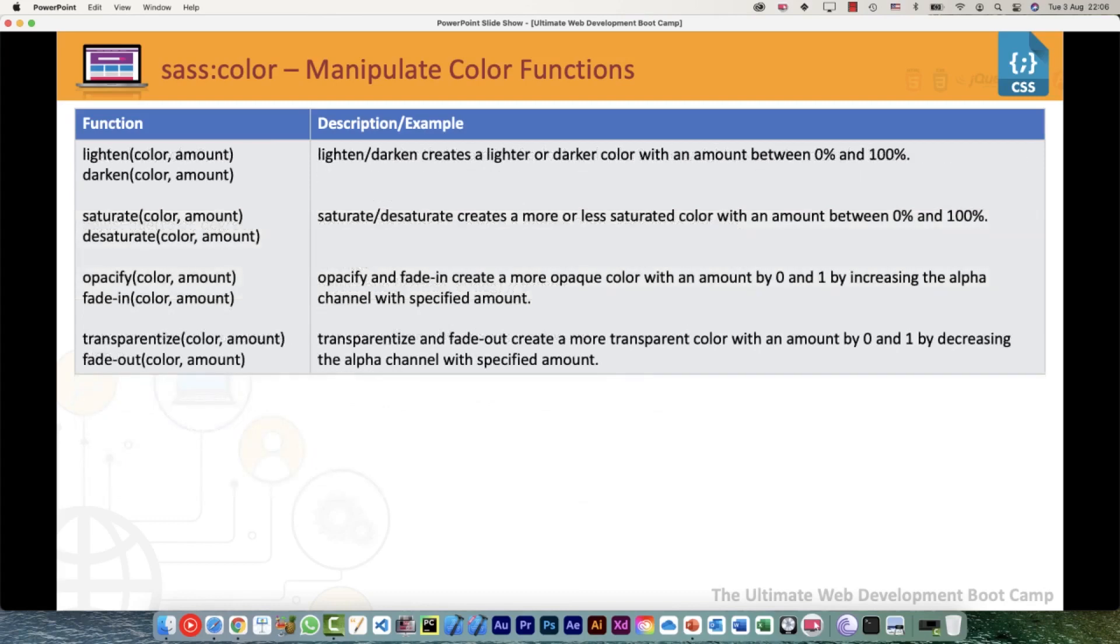Then we have lighten and darken. This is very handy, a very useful function. If we need to lighten a color by a certain amount, by a certain percentage between 0 and 100%, the same applies for darken, that's the opposite of lighten. The same thing for saturation and desaturation: we can use saturate and desaturate, and the amount would be again between 0% and 100%.